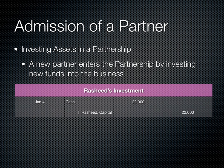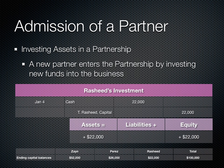In this second scenario, instead of purchasing a portion of Perez's interest, Rashid decides to join the partnership by investing a flat $22,000 directly into the enterprise. On the statement of partners' equity, Rashid is added, but Perez's $26,000 investment remains intact, and Rashid's investment is now being shown.